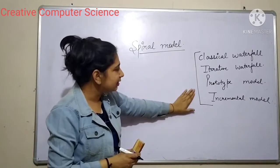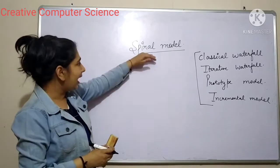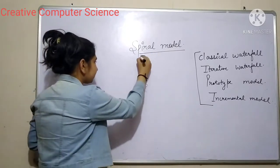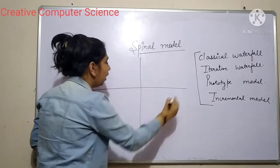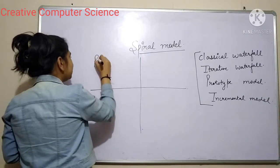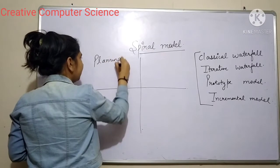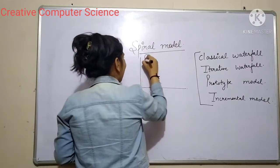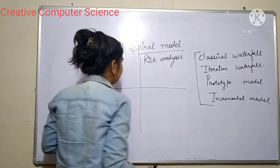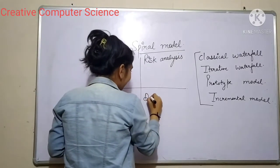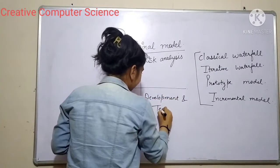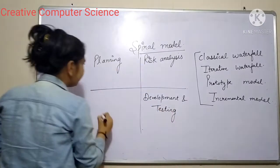We have discussed these four models. Now I am going to tell you a little bit about the spiral model. This spiral model works in four phases. The first phase is planning. The second phase is risk analysis. The third phase is development and testing. And the fourth phase is evaluation.